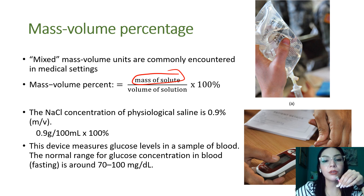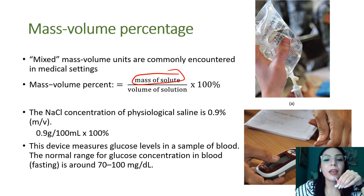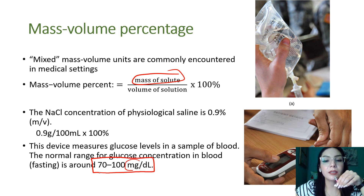Another example is blood glucose levels. My mom has type 2 diabetes and takes her concentration every morning — she'll tell me she got 110 or 120, which is pretty good for a diabetic. What she's referring to is milligrams per deciliter, which is a mixed mass-to-volume concentration unit — another real-world application of solution concentration.